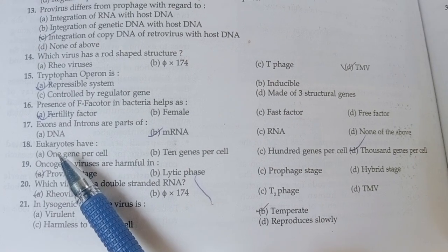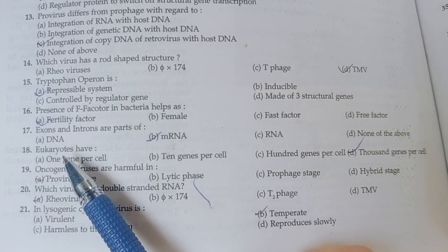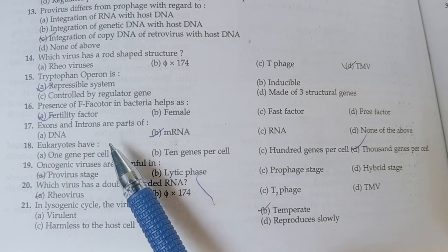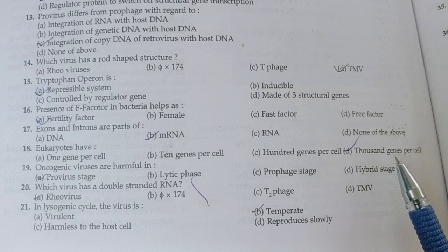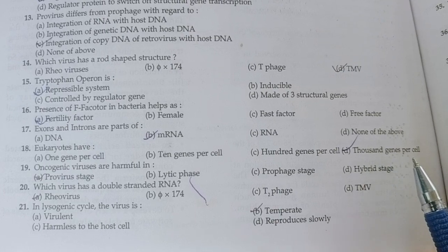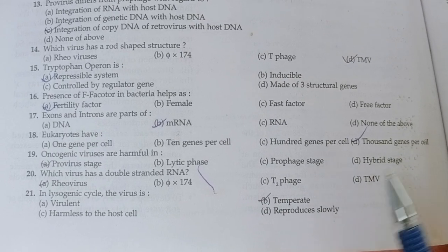Question 18: Eukaryotes have — option D is correct, that is one thousand genes per cell.